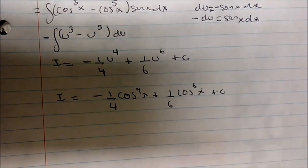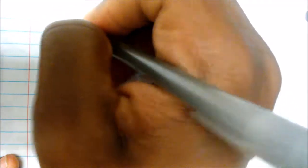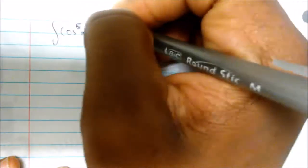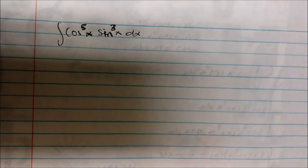Whenever the powers are both odd, that's the idea. Let's look at one more: the integral of cosine to the fifth x times sine to the third x dx. Both powers are odd, so I'm going to borrow one from the easiest one — in this case, borrow one from sine — to use my identity.